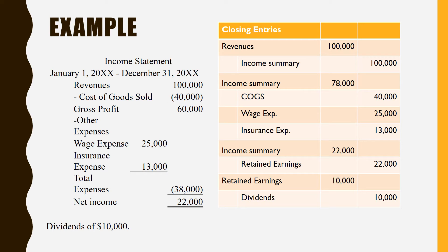The journal entries themselves are very easy because you always do the same thing. The first thing we want to close is revenues. Those have a credit balance, so to zero that out we have to debit them — we debit revenue and then credit income summary. Income summary is the most temporary of temporary accounts; it's on the books for a minute every year. We use it so that retained earnings doesn't get as messy, since only a couple things affect retained earnings.